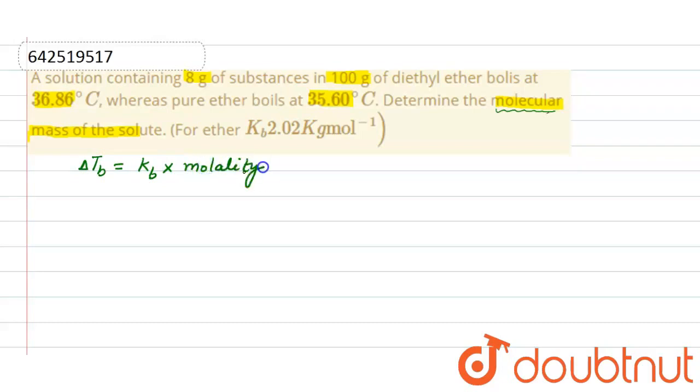Now, what is ΔTb here? ΔTb is the boiling point temperature of the solution, which is given as 36.86, minus the boiling point temperature of the solvent in pure state, which is 35.60. So ΔTb will be 1.26 degrees Celsius.